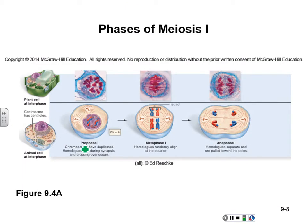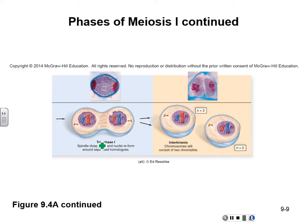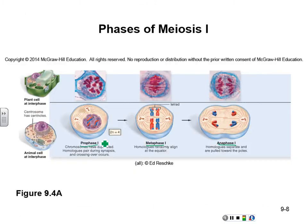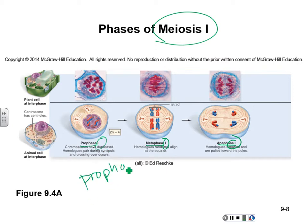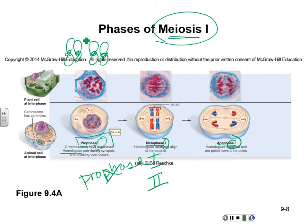Let's look at meiosis I. Again, we have the same phases: prophase, metaphase, anaphase, and telophase. And instead of cytokinesis, we now have interkinesis. You also see that there are ones — this is meiosis I. During prophase I is when the chromosomes have duplicated, the homologous pairs synapse, and crossing over occurs. Remember, homologous pairs are when you have four of the same chromosome — these were the sister chromatids, and these were the homologues.